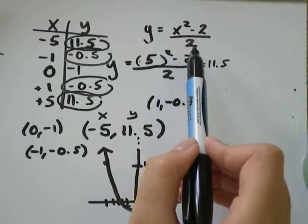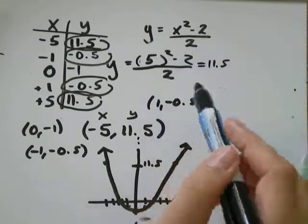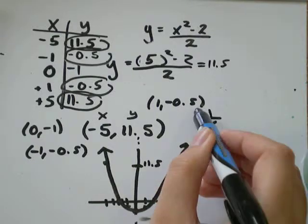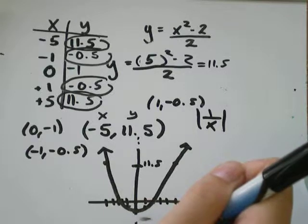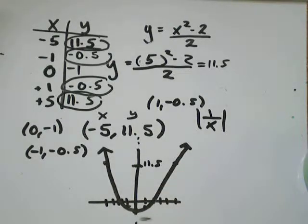So, it doesn't matter what this equation is. It could be a cubic. It could be something like 1 over X. It could be the absolute value of 1 over X or whatever. It doesn't matter. The same method will always get you the right answer.